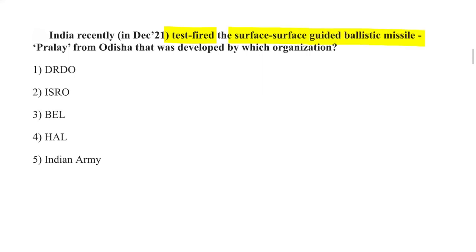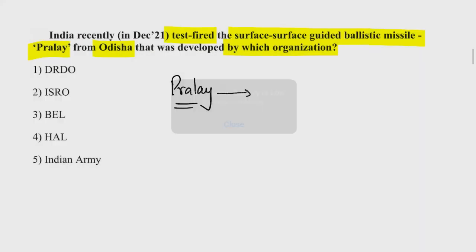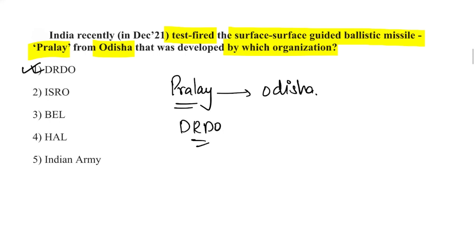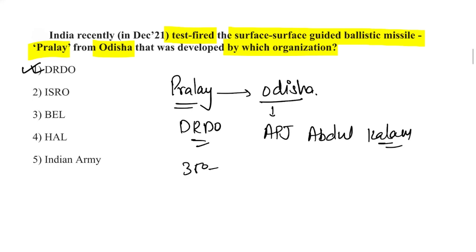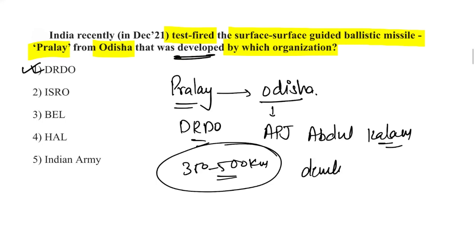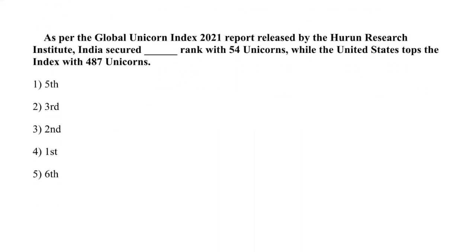India recently test-fired the surface-to-surface guided ballistic missile Pralay from Odisha. It was developed and test-fired by DRDO from APJ Abdul Kalam Island off the coast of Odisha. The missile has a range of approximately 350 to 500 kilometers.